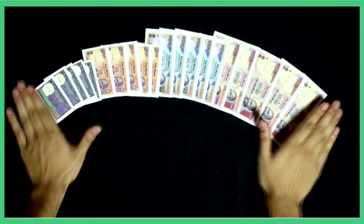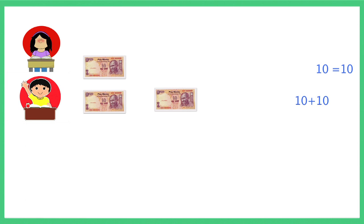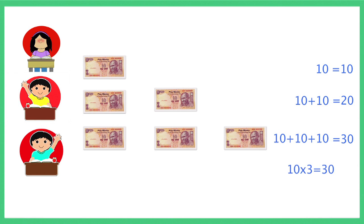Children learn instinctively through handling play money. Give one 10 rupee note to Amina, two notes to John, three notes to Raju. Raju, for instance, has three notes of 10 rupees each, and thus has a total of 30 rupees. This can be shown as repeated addition or using the multiplication sign.